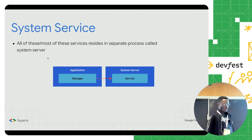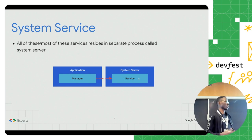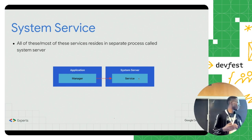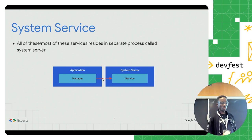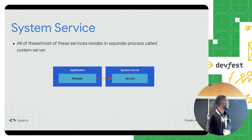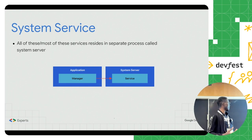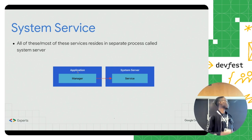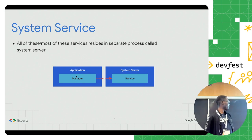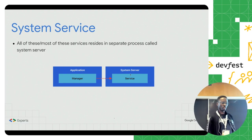We have the application running on its own process, and on the other side we have the service — it could be a notification manager service or any kind of service on your device. From your application, you need to access that particular service. There is a mechanism designed by the people who built the Android operating system: inside your application, you have access to what we call a manager. The manager delegates all the actions you need to perform to the particular service. For example, if I need access to the alarm service, I use the alarm manager inside my application, and that alarm manager delegates the action to the specific service running on another process.